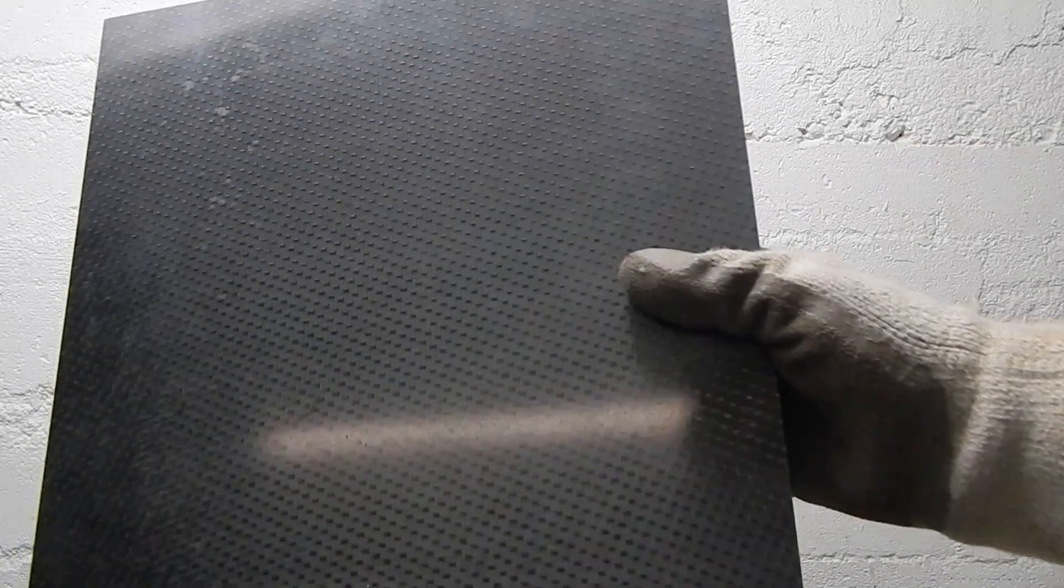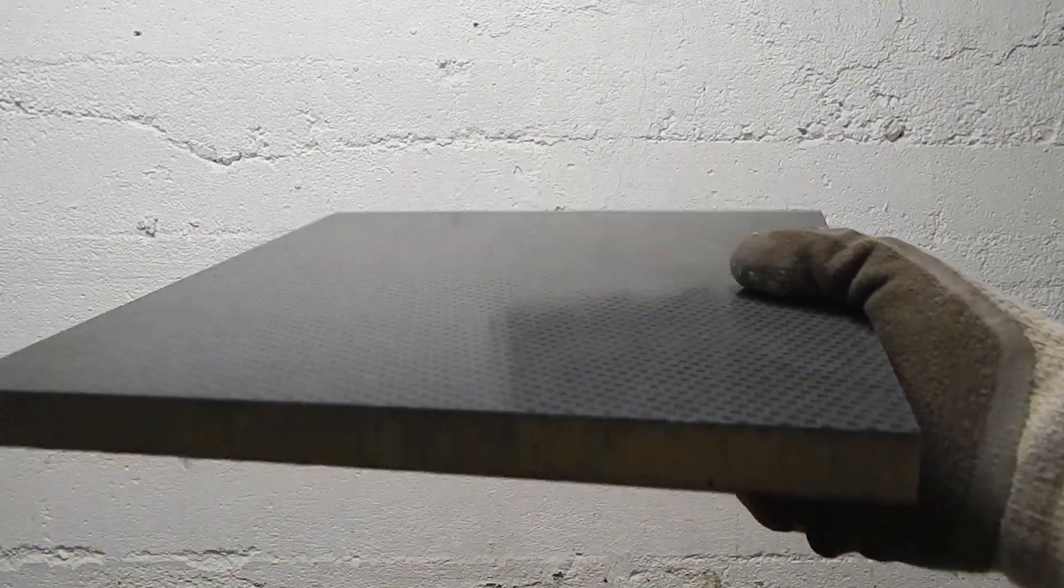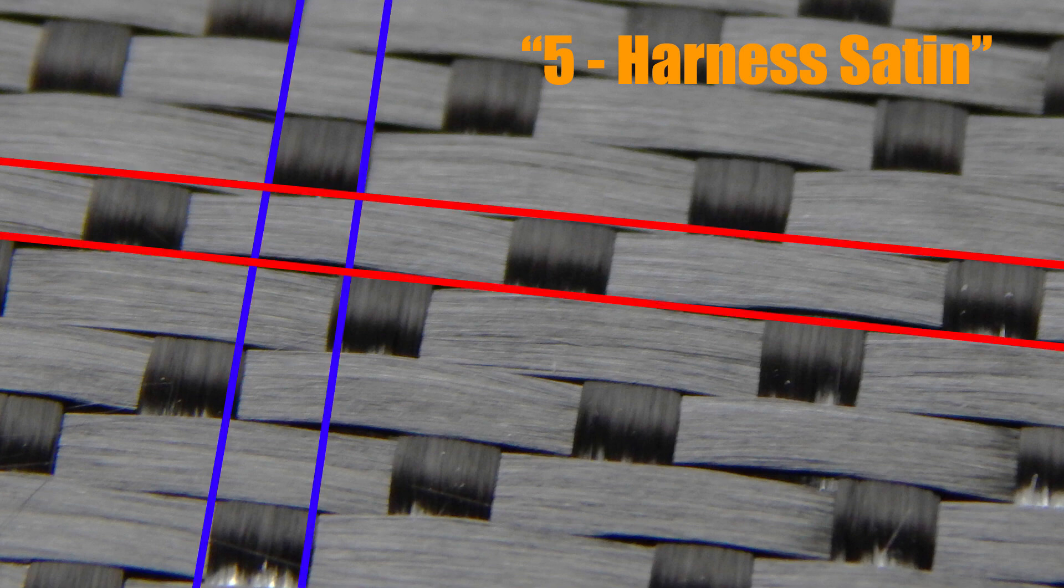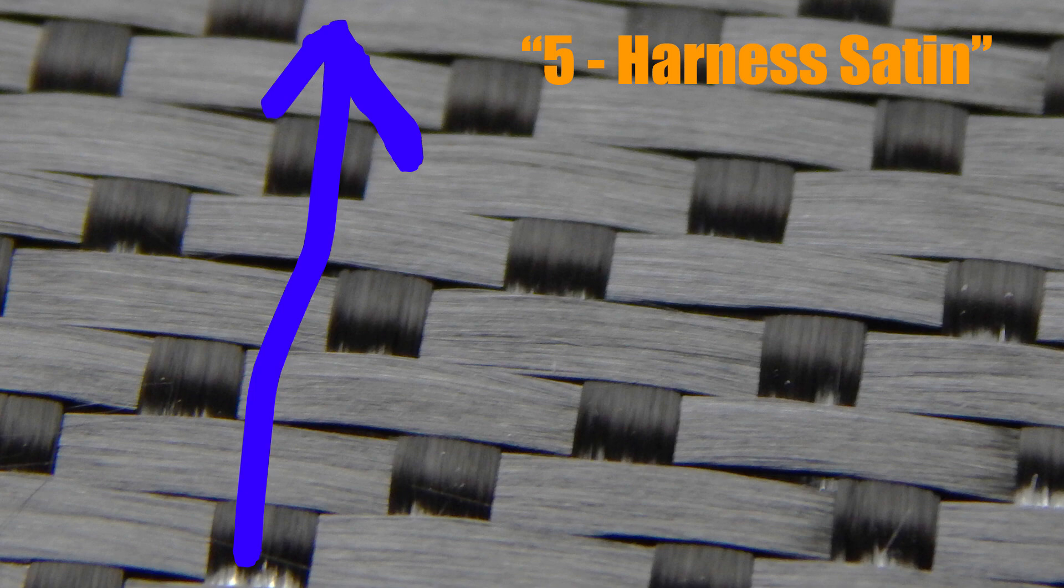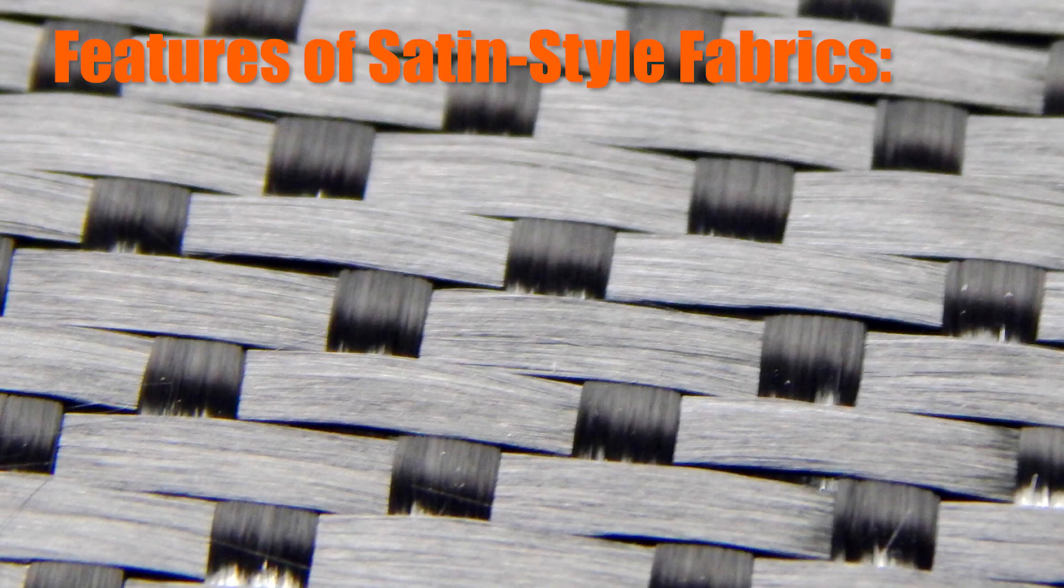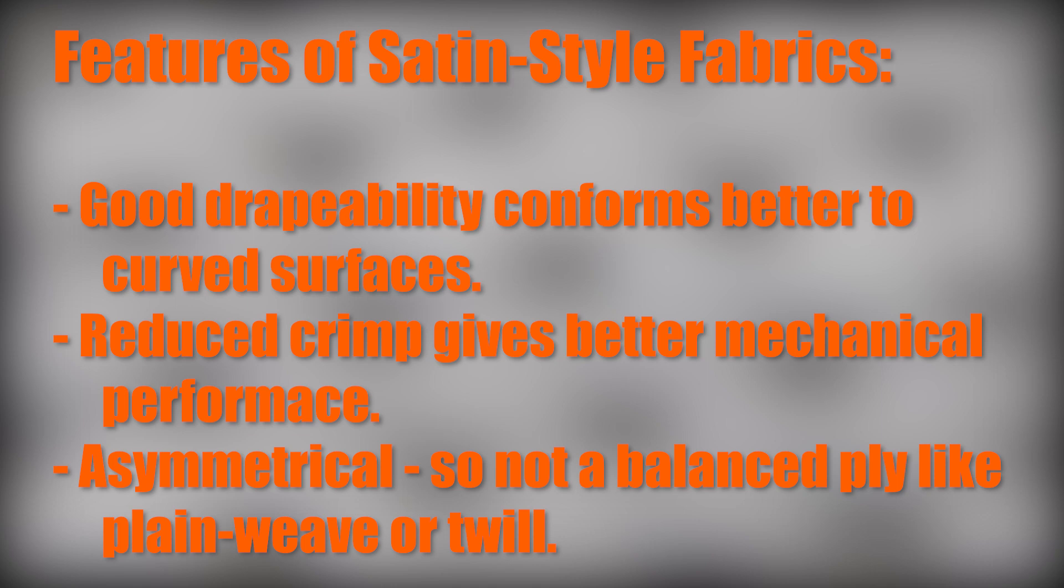This surface ply is about 400g, five harness satin woven carbon. And that just means that instead of a one up, one over, like a normal plain weave, every fifth toe goes up and over the other. So it's asymmetrical. You can see more of the red direction toe up. And this gives it good drapeability, better covering curved surfaces, reduced crimp from fewer ups and downs makes it a little bit stronger, but it does have an asymmetric ply. It's not woven where it is naturally balanced.